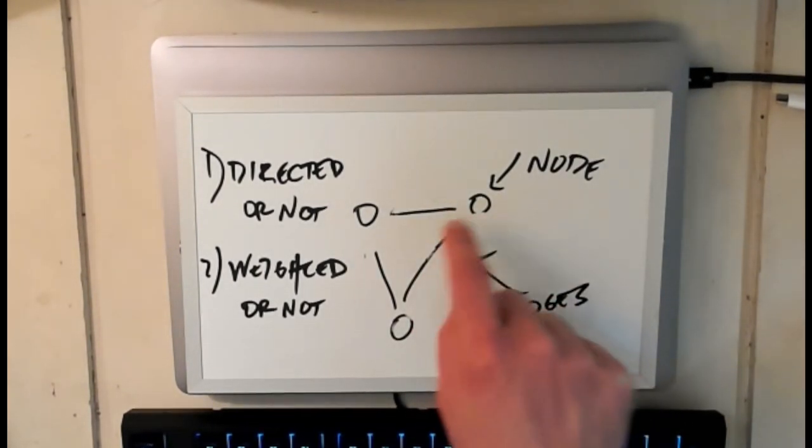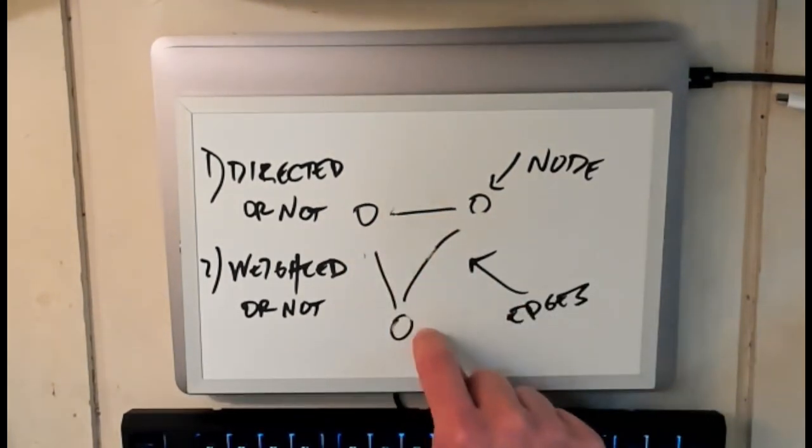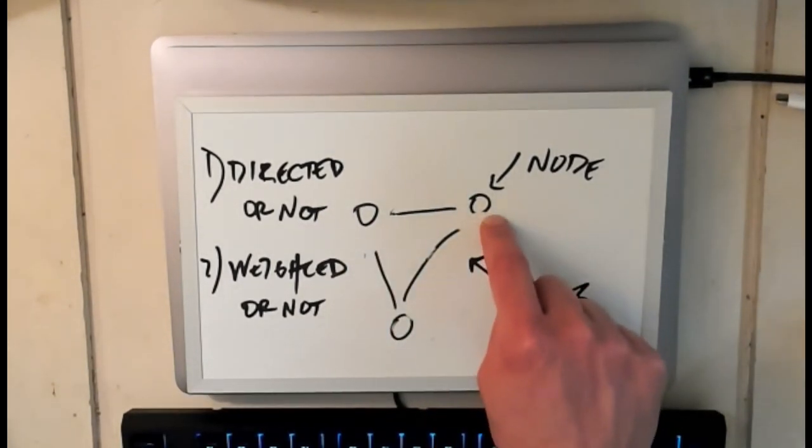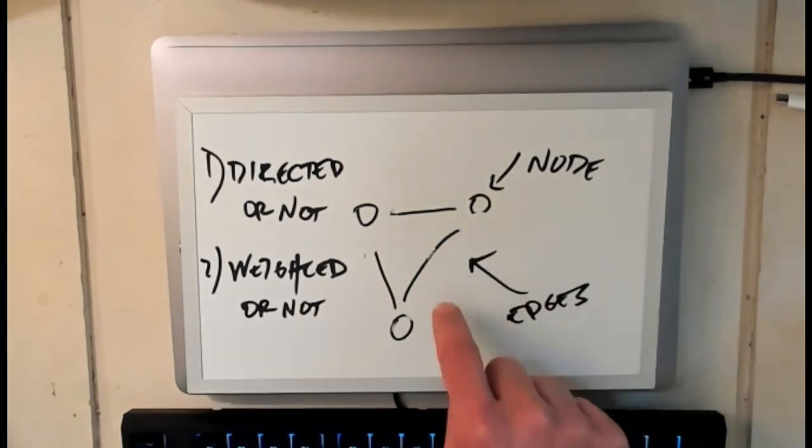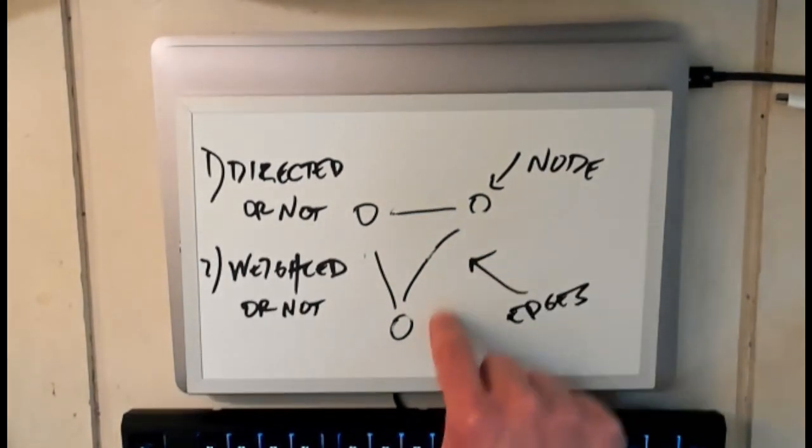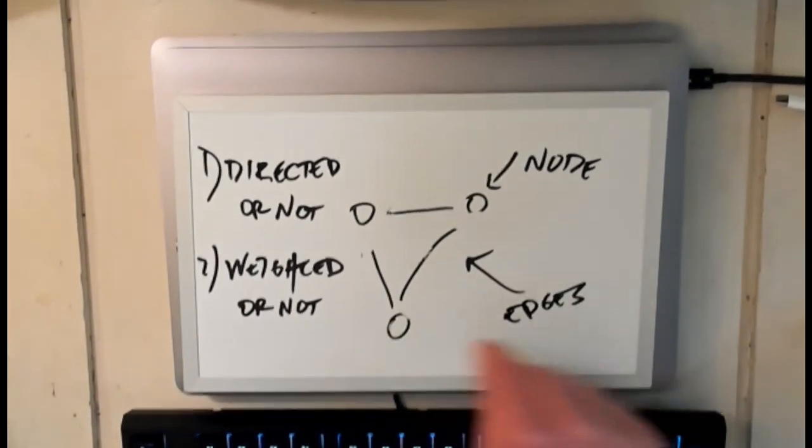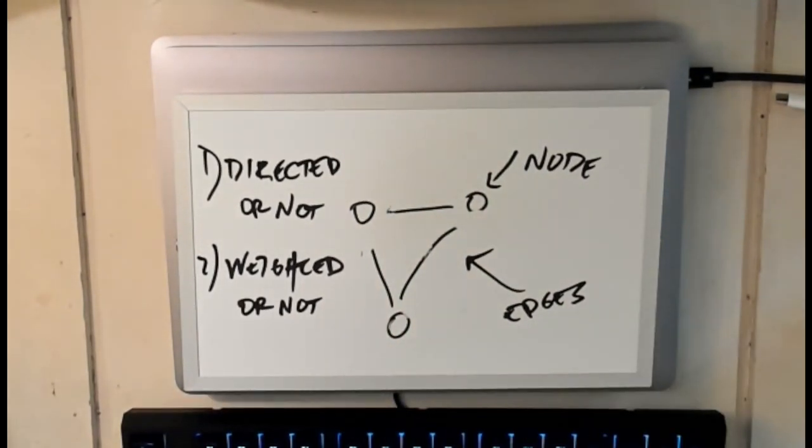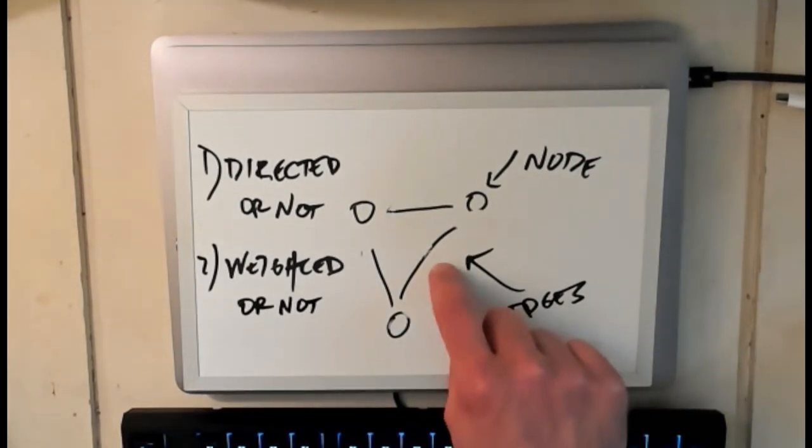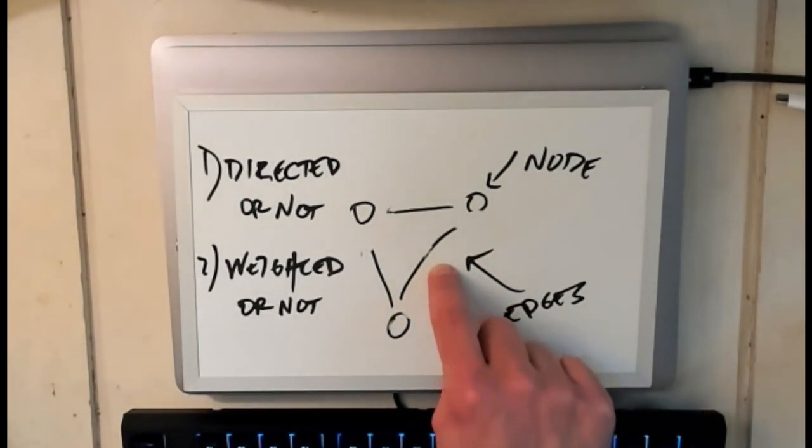So one thing that you can represent with this graph is adjacency. If I have a map and every node is a country I can connect two nodes that share a border. That's a case where the relationship is obviously bilateral. If I have a border, two countries have a border, both of them have a border with each other. There's no notion of I have a border with a country but it doesn't have one with me. That doesn't make any sense. So the idea of the graph being undirected makes sense.